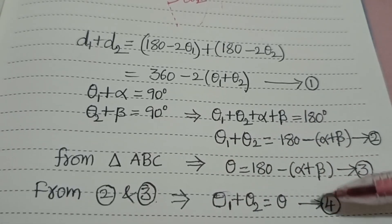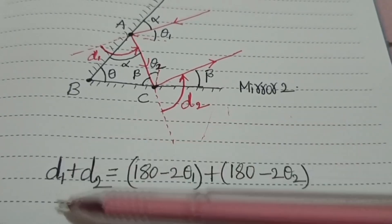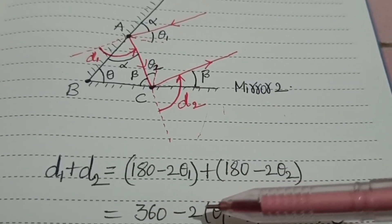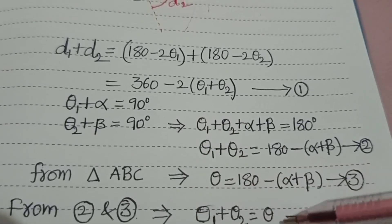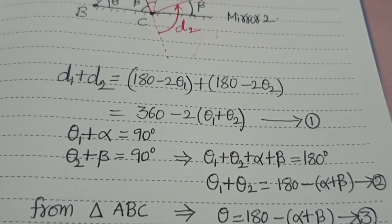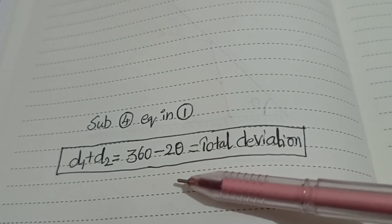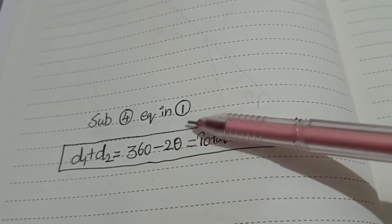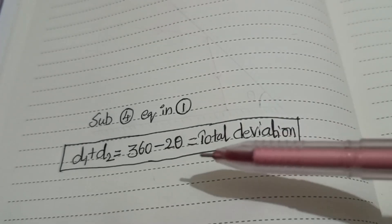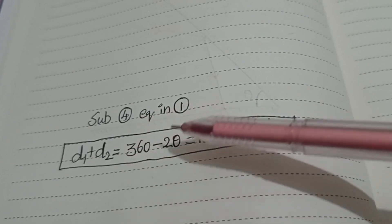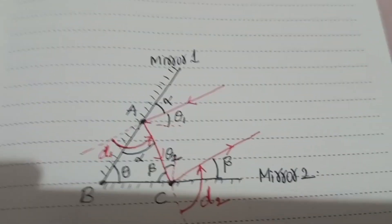By substituting this fourth equation (θ1 + θ2 = θ) into the first equation, where total deviation D = 360° - 2(θ1 + θ2), we obtain the total deviation D = 360° - 2θ, where theta is the angle between the two plane mirrors. If you know the angle between the two plane mirrors, you can find the total deviation after reflections using this formula: 360° - 2θ. In this way, we derive the formula for total deviation in the case of two plane mirrors.